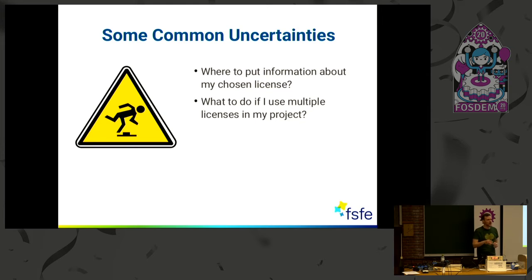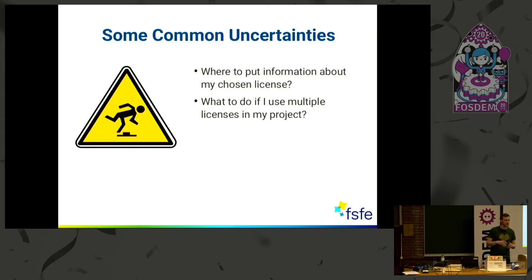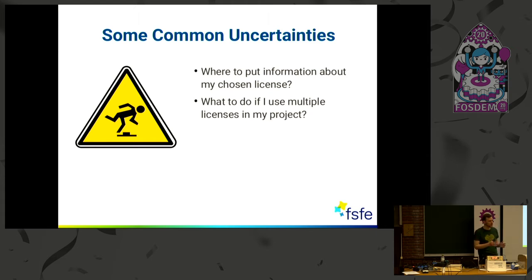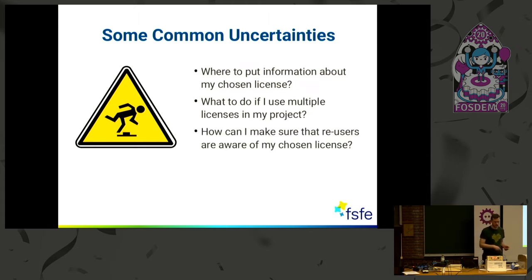And what do I do when I have multiple licenses in my project? This could happen if your code is under a GPL license, but you have some documentation which should be under a documentation license like Creative Commons. So you have two licenses now. Where to put this information? Two license files in your repo? That's complicated.